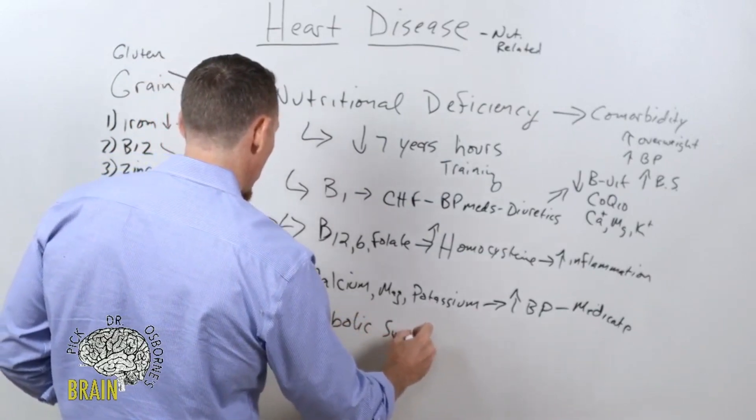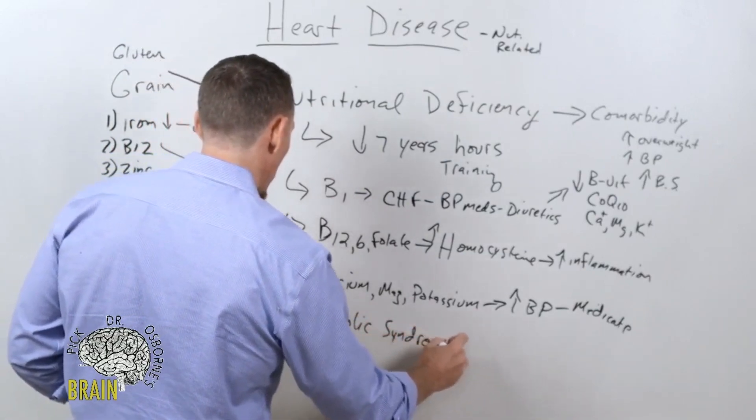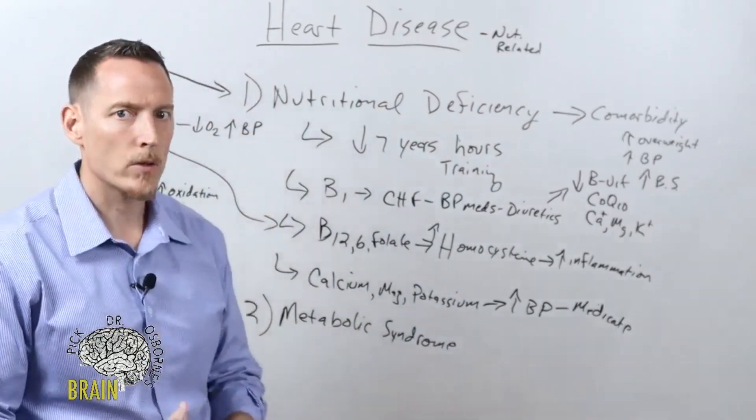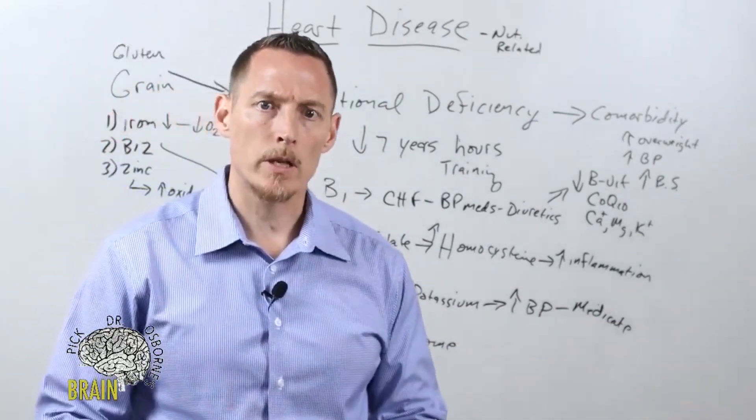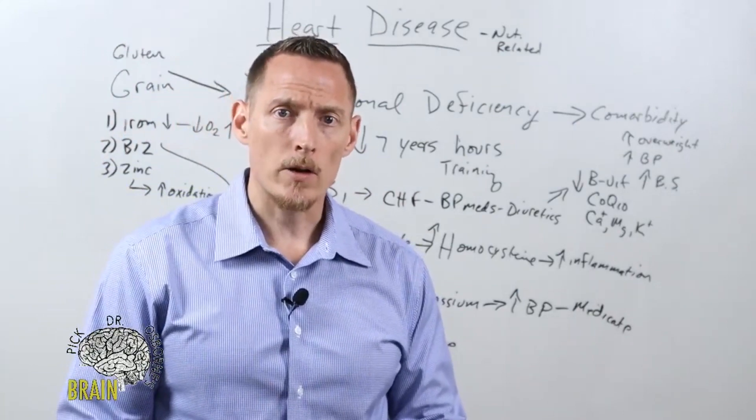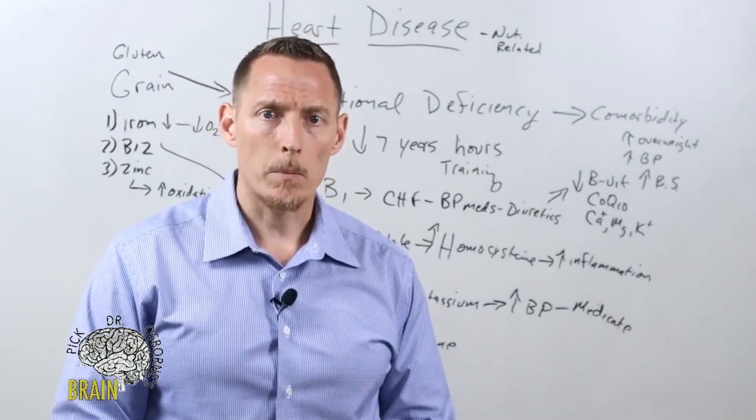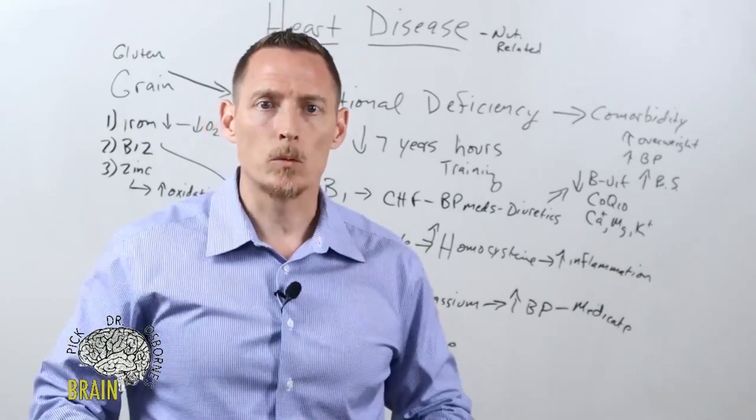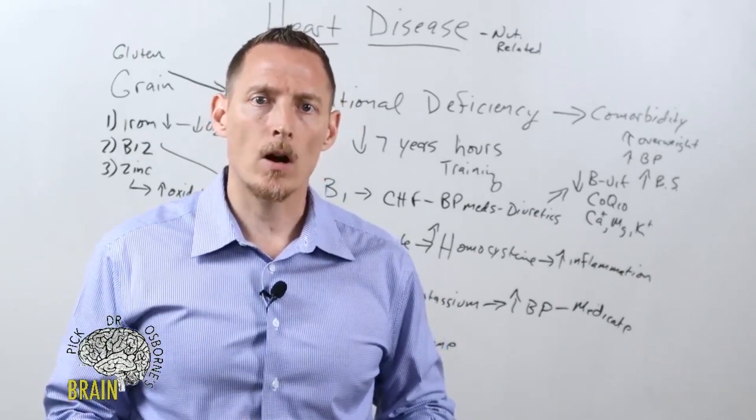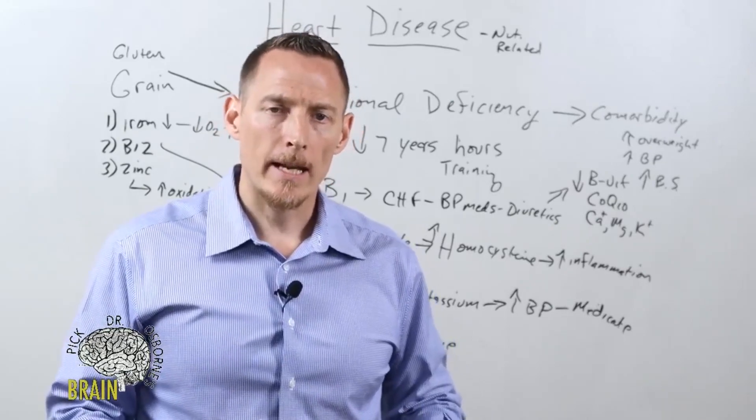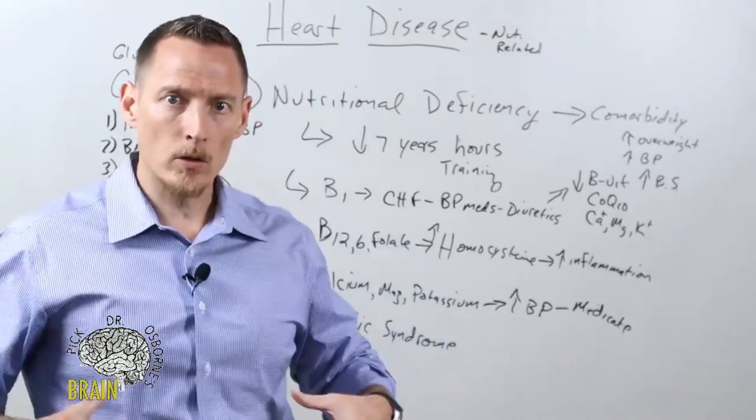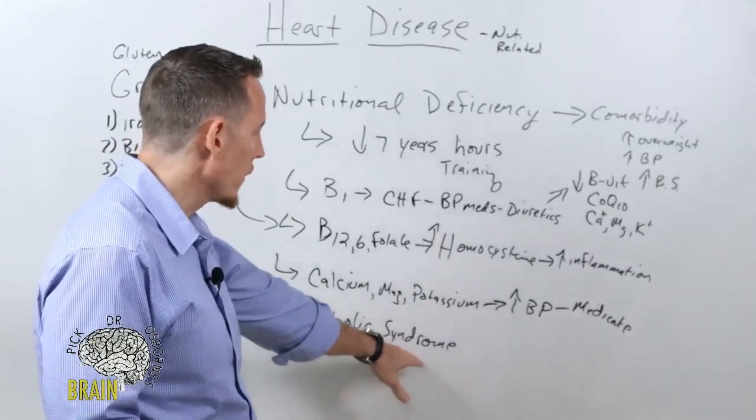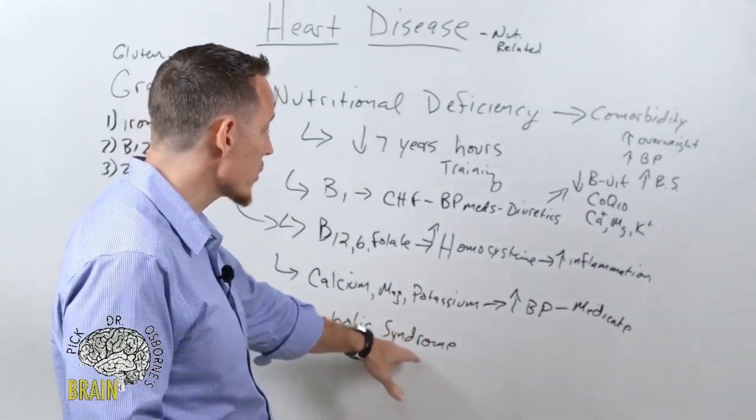Metabolic syndrome is a conglomeration of different risk factors for heart disease. It's a mixture of increased blood pressure, increased blood sugar, and increased weight. That trifecta is oftentimes called metabolic syndrome, meaning a person's gaining weight, especially central weight—fat around their heart, around their abdominal casing. That centralized weight storage is a hallmark symptom of metabolic syndrome, coupled with increased blood sugar and increased blood pressure.